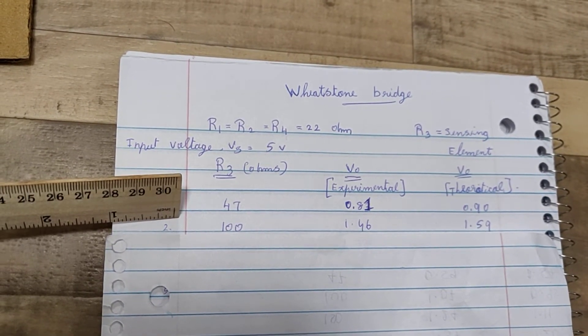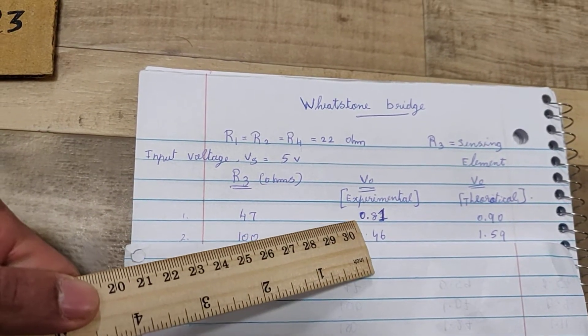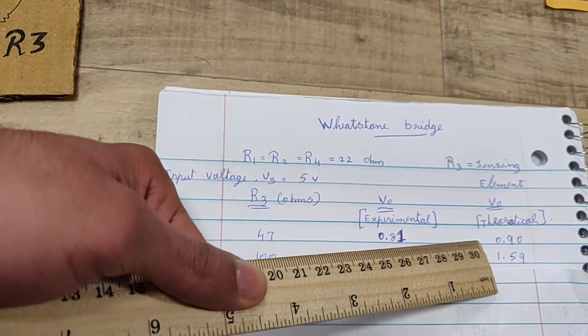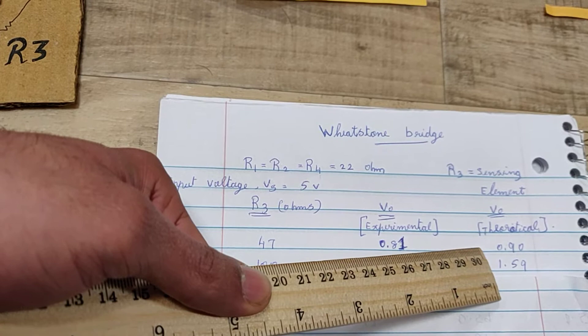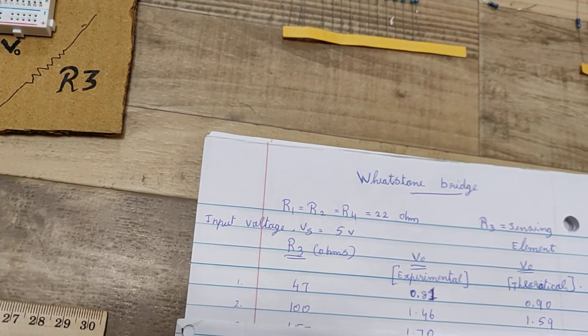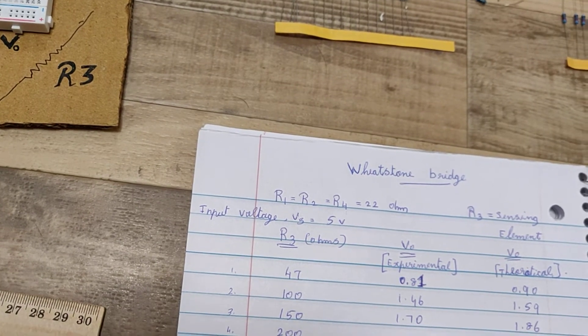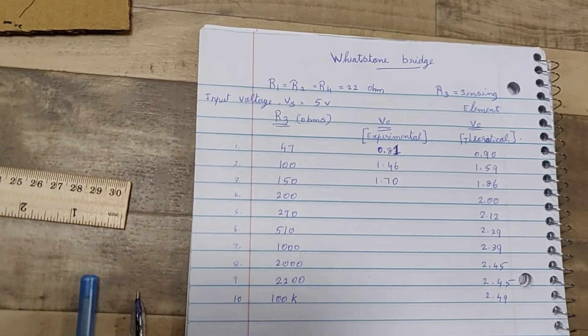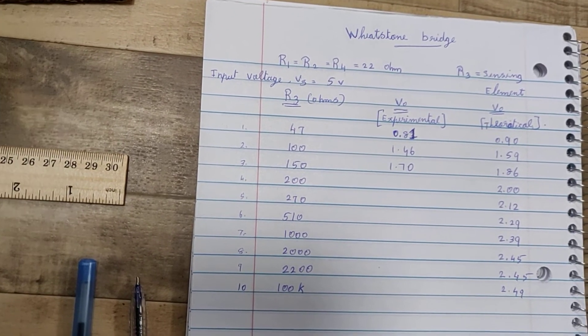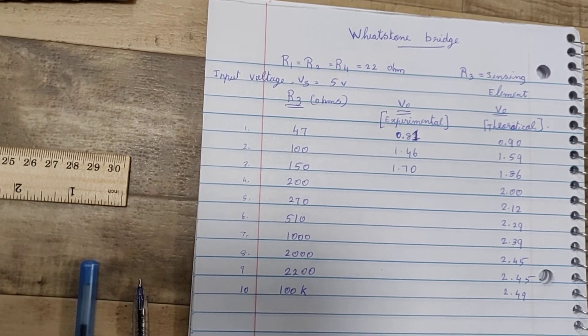This is our experimental values and this is our theoretical values which we have pre-calculated. We are going to extend this calculation till 100K resistor and compare our experimental values with theoretical values.